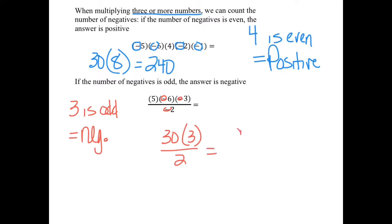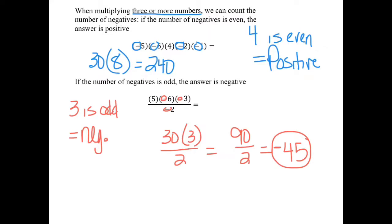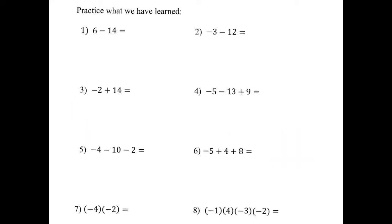30 times 3 is 90, divided by 2. 90 divided by 2 is 45. My final answer is negative 45. Those are the rules for multiplying, dividing, adding, and subtracting integers — which apply to all rational numbers.